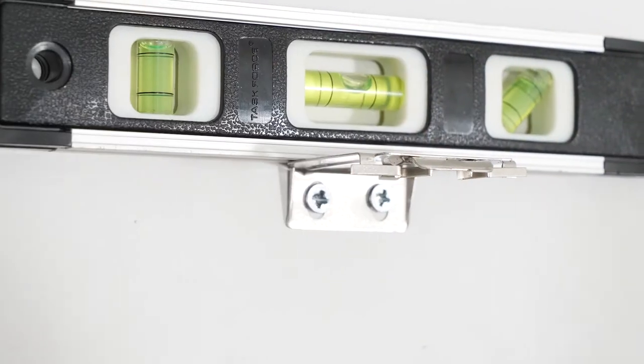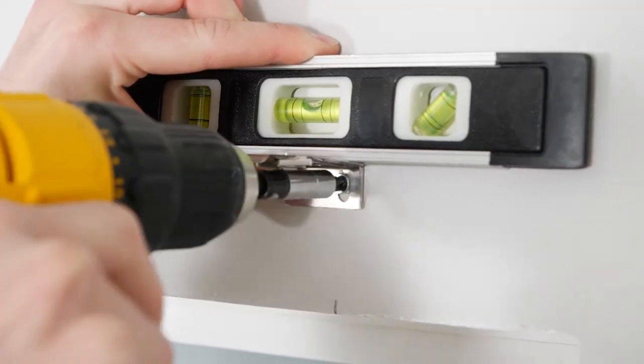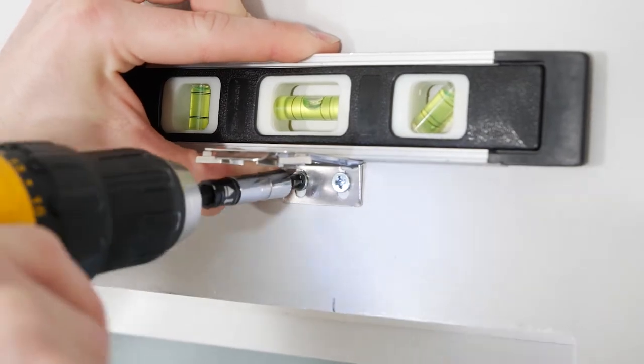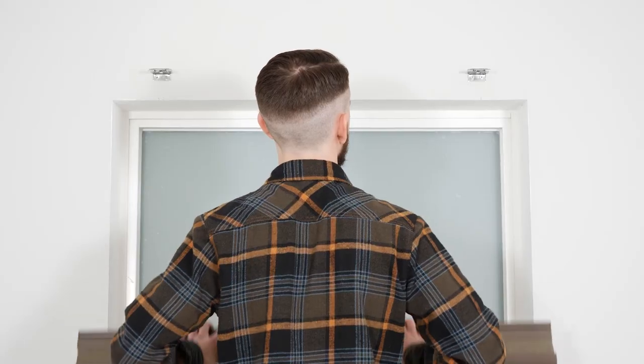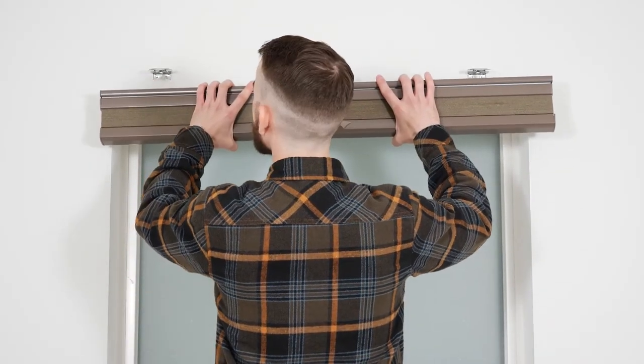Place your level on each bracket, making sure everything is straight. Finish drilling the screws in all the way. Now you're ready to attach the shade to the brackets.